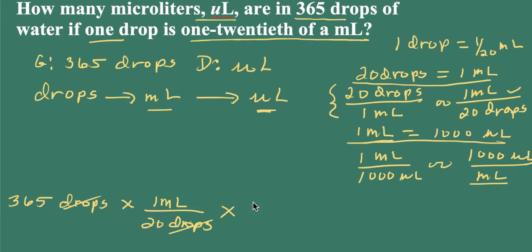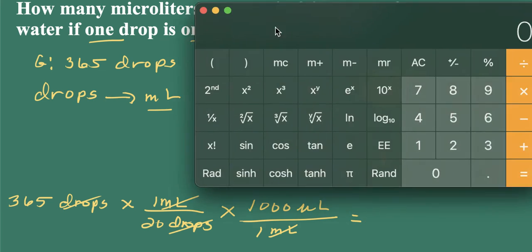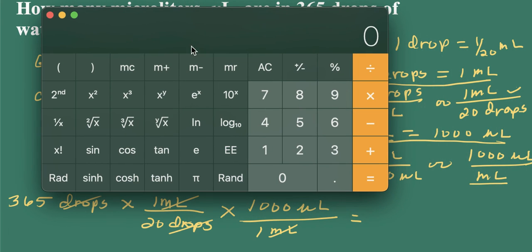Again, I'll use this one here. Number two. So 1,000 microliters per milliliter. Milliliters cancel, and I'm left with microliters. So here is my calculator from my computer. So we have 365 drops divided by 20 drops multiplied by 1,000. And that equals 18,250